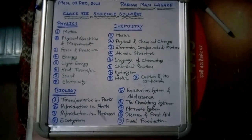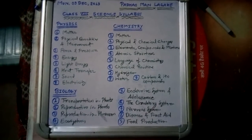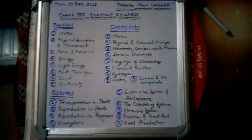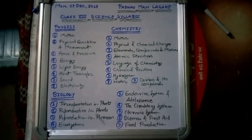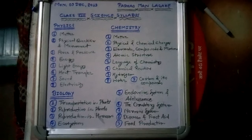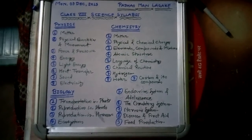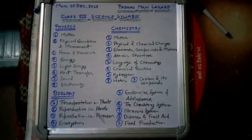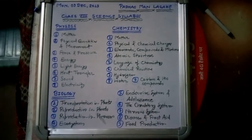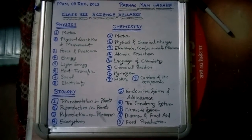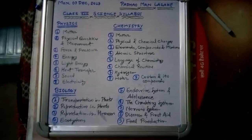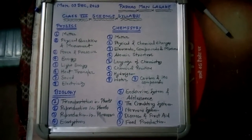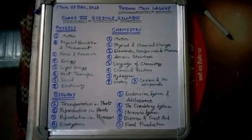In biology, there are also 9 chapters. Chapter 1: Transportation in Plants, Chapter 2: Reproduction in Plants, Chapter 3: Reproduction in Humans, Chapter 4: Ecosystems, Chapter 5: Endocrine System and Adolescence, Chapter 6: Circulatory System, Chapter 7: Nervous System, Chapter 8: Drugs and First Aid, Chapter 9: Food Production.